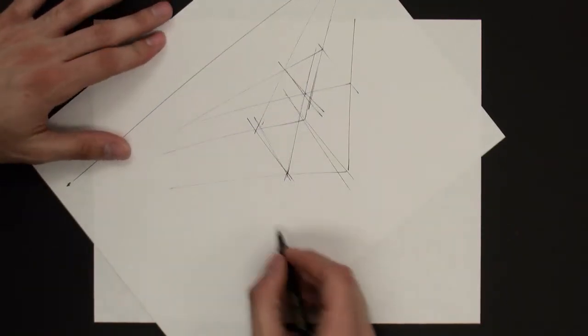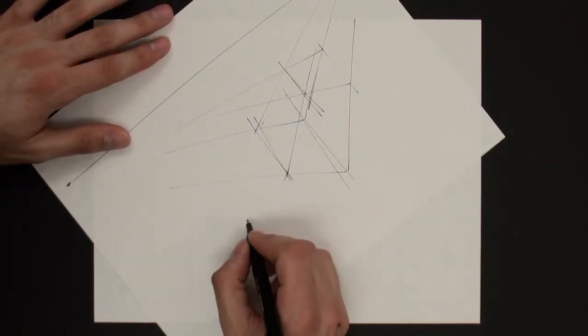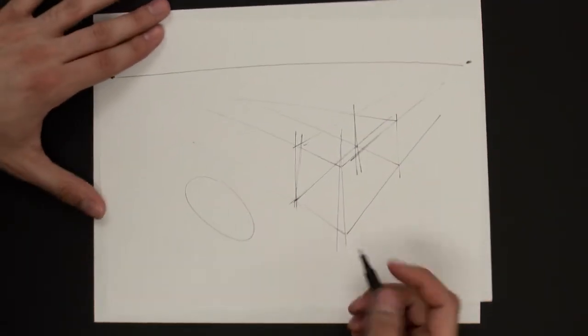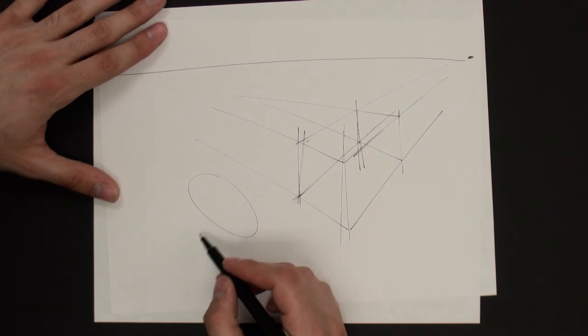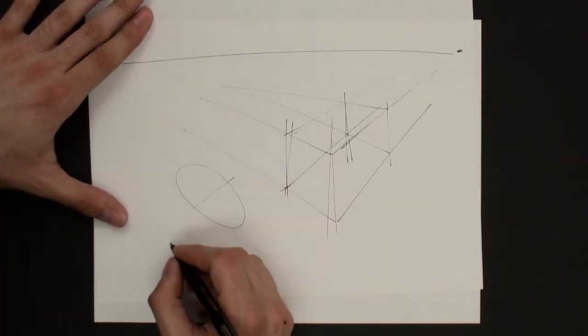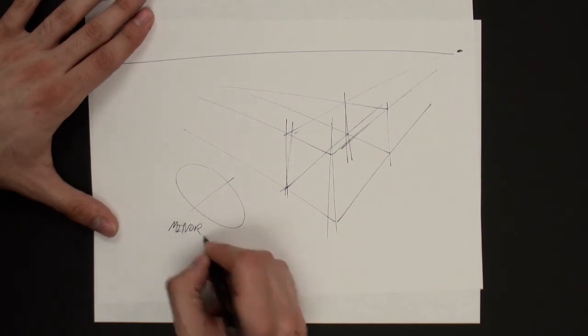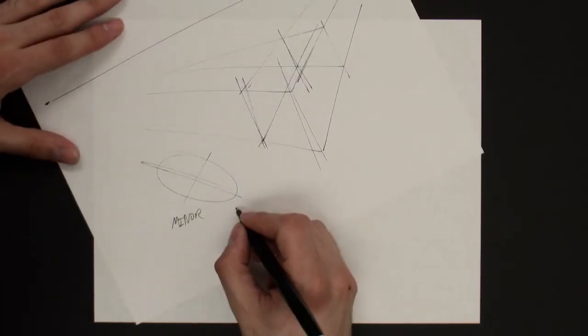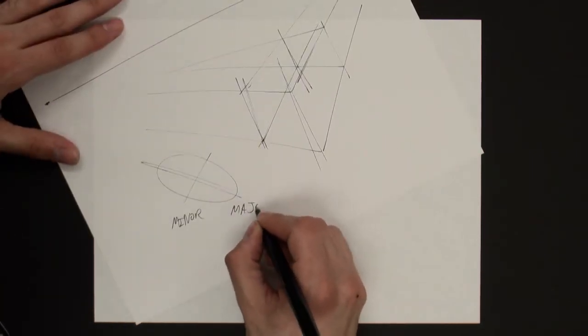So let's quickly go over the structure of an ellipse. So if you have an ellipse, the shortest line across the ellipse is going to be the minor axis. And the longest line across the ellipse is the major axis.